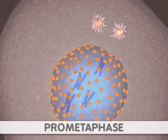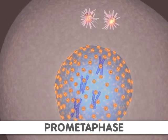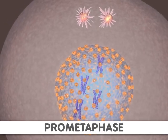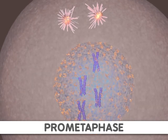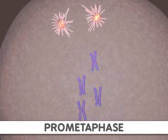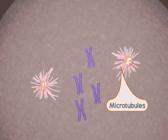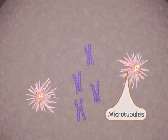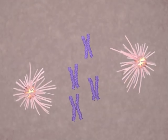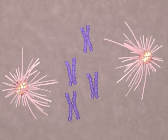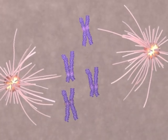Next, prometaphase begins when the nuclear membrane is broken down. At the same time, microtubule strands, or spindle fibers, are growing from the centrosomes. These strands attach to a protein structure called the kinetochore. One kinetochore is attached to the centromere of each sister chromatid.